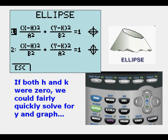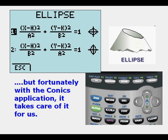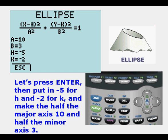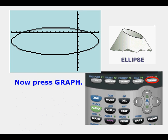If both H and K were zero, we could fairly quickly solve for Y and graph just like we did for the circle. But fortunately, with the conics application, it takes care of it for us. Half the major or larger axis is called A and half the minor or smaller axis is B. Let's press Enter and then put in negative 5 for H and negative 2 for K. Then make half the major axis 10 and half the minor axis 3. We press Graph and this is what we see.